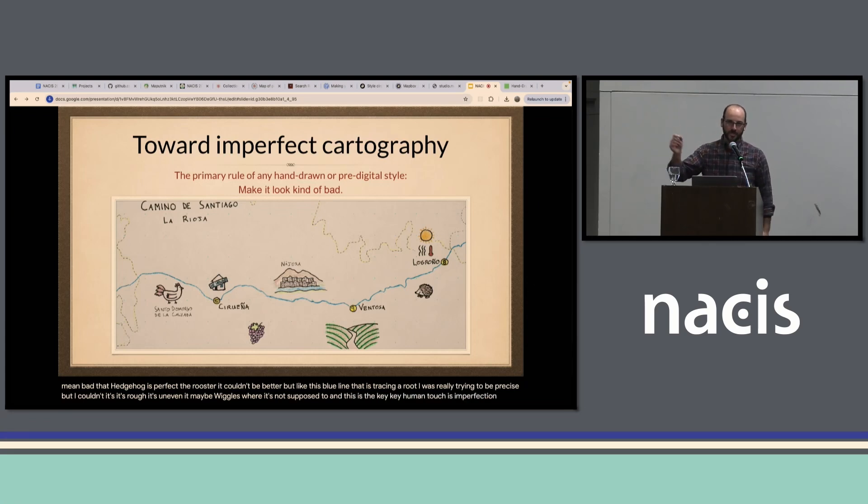This is the key: human touch is imperfection. The hand trembles, it can't apply ink perfectly evenly, you can't draw 300 DPI. Maybe Anton can, I don't know, but I think most of us can't.